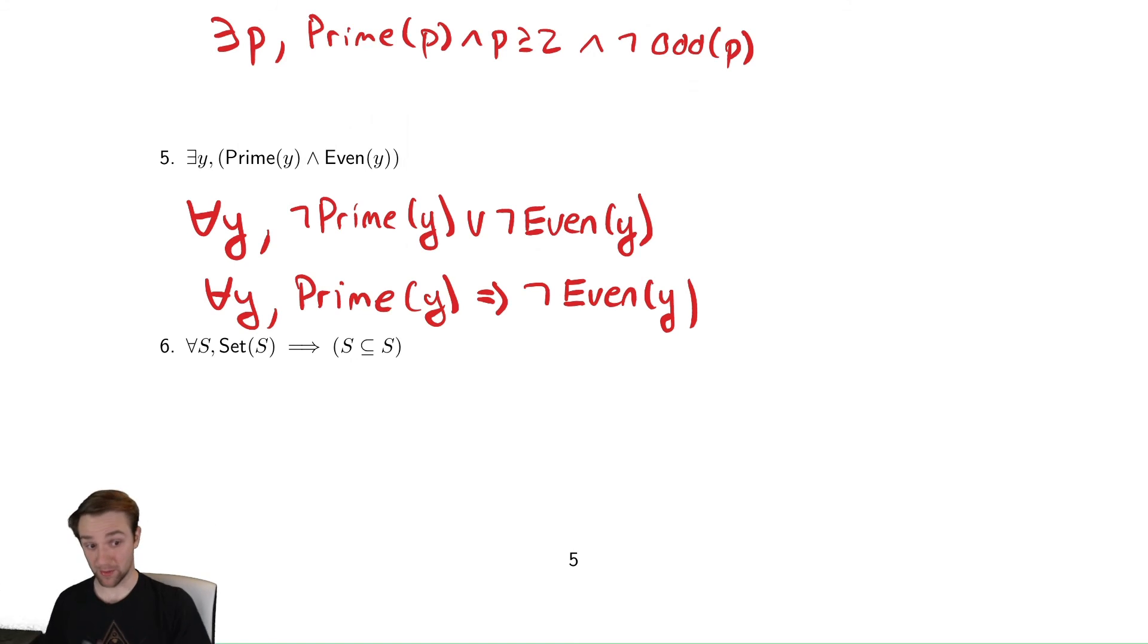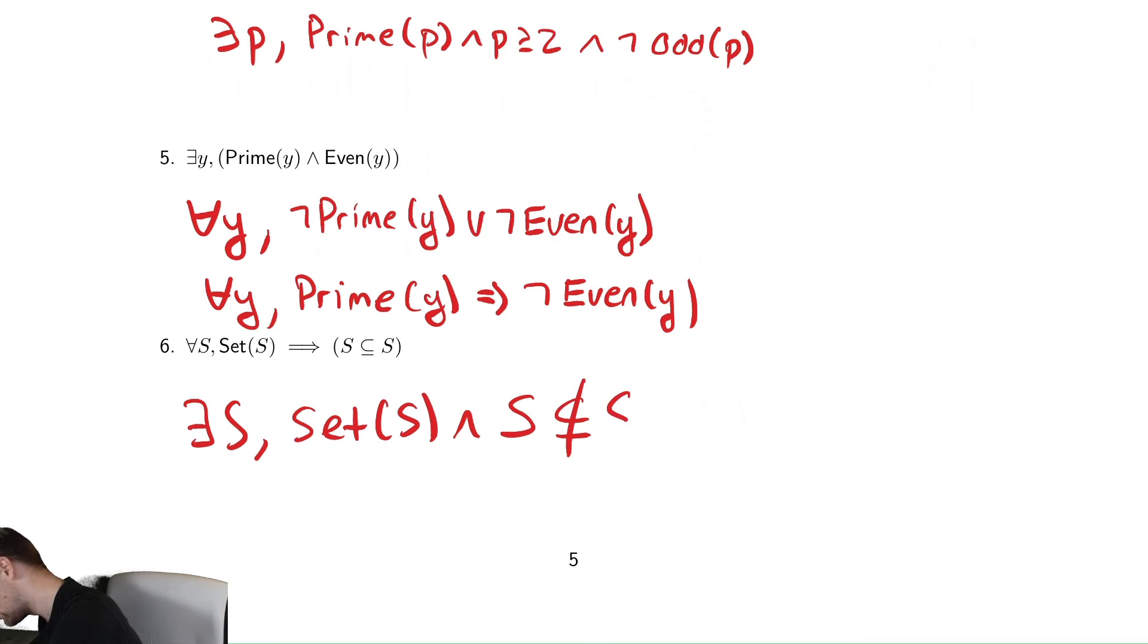Our last example is another implication so this for all changes to a there exists an s such that it is a set and it is not a subset. So we write that as s is not a subset of itself. So this says that there is some set that is not a subset of itself, so that is the opposite of the original statement which is that every single set is a subset of itself.